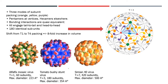Shifting from T1 to T4 packaging results in an 8-fold increase in volume. Examples include: alfalfa mosaic virus (T=1, 60 subunits), tomato bushy stunt virus (T=3), and simian virus (T=7, 420 subunits). You don't need to draw the structural diagrams, but you should be able to write the virus name, the subunit number, and the triangulation number T1, T3, or T7.